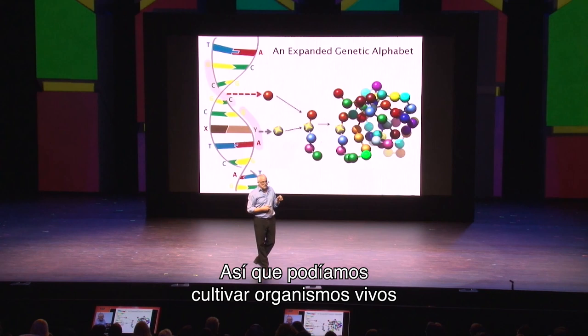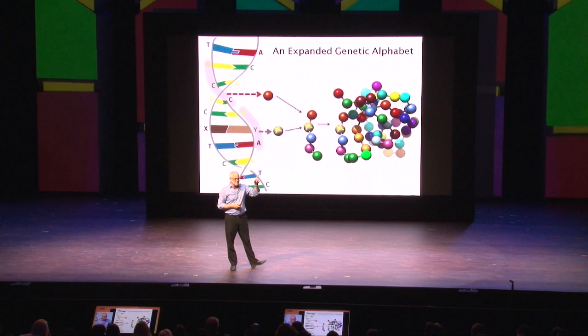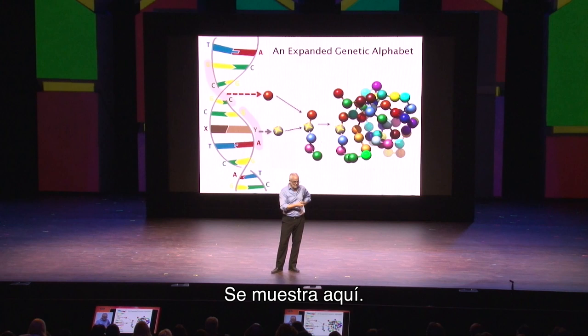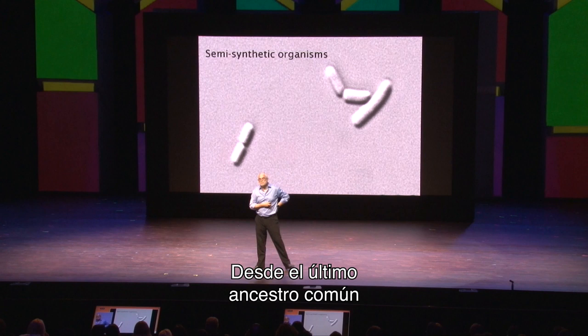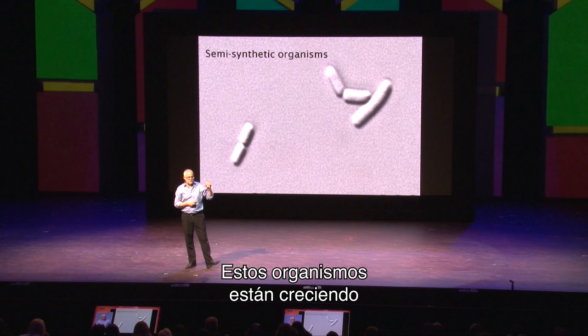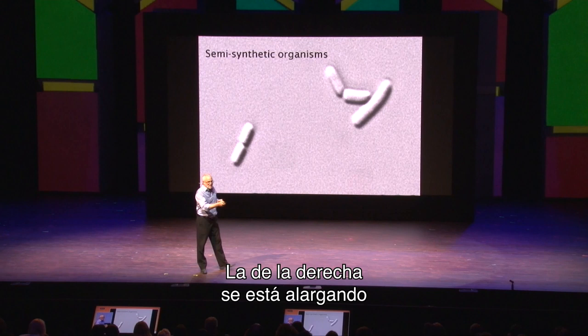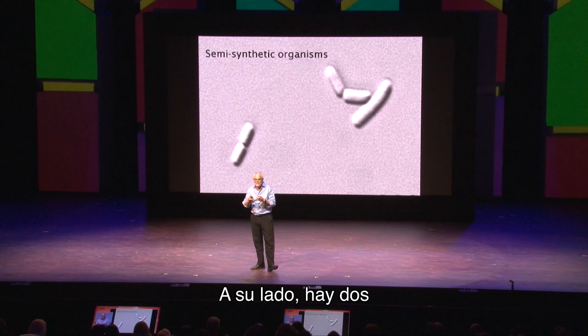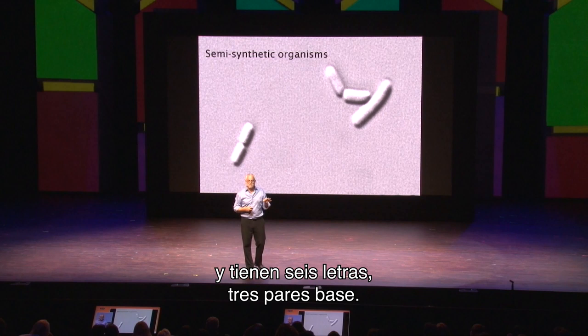We could grow living organisms that had X and Y in their DNA, and that they could use that to make proteins. Since the last common ancestor of all life on Earth, it's been four letters and two pairs. These organisms are growing — and I love this picture because it actually catches them in the act of dividing. The one on the right is elongating, an E. coli cell about to divide. Next to him, our two organisms are in the process of dividing into two cells. And they have six letters, three base pairs.